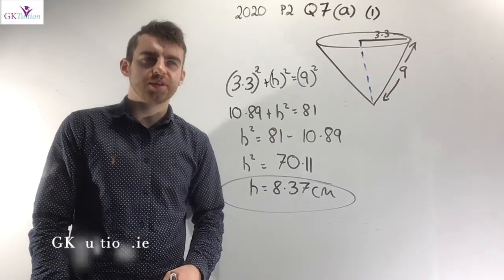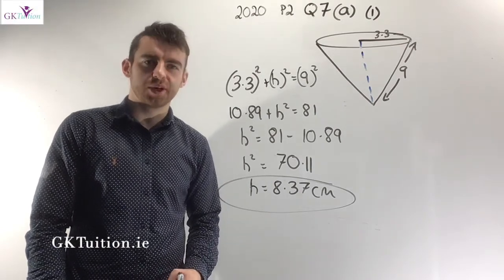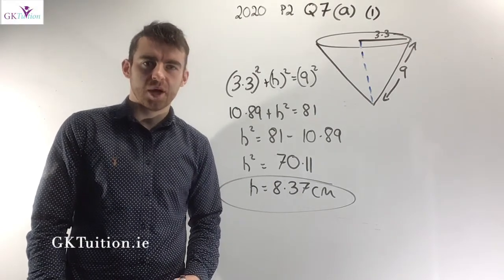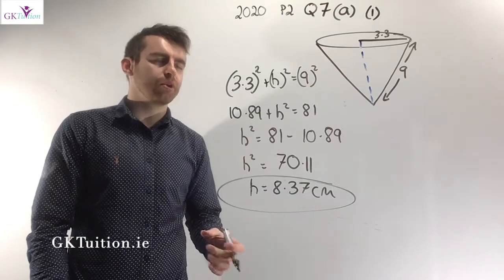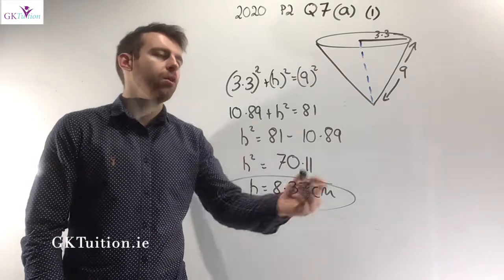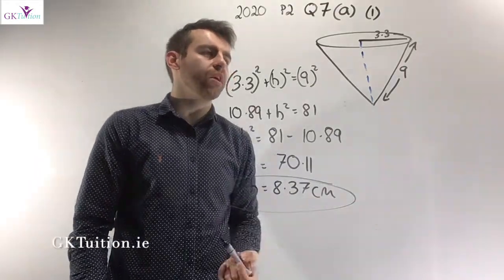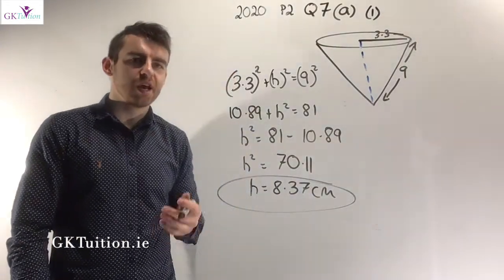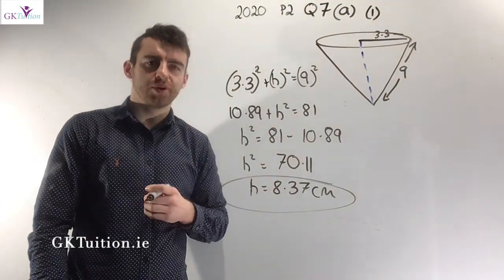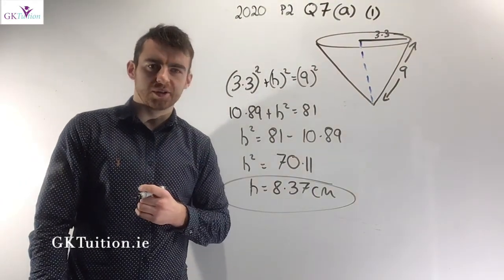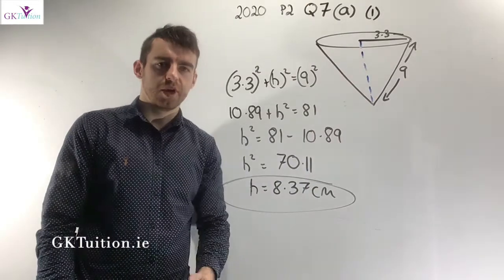In this tutorial I want to talk about 2020 paper 2 question 7. We're talking about a biodegradable cone. We're told the slant height of the cone is 9 centimetres and the radius is 3.3 centimetres. We're asked to work out the vertical height of the cone.